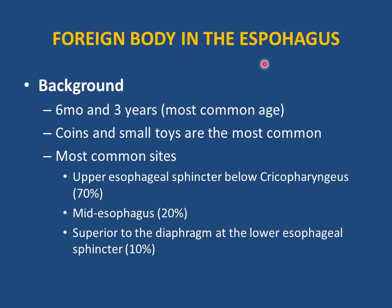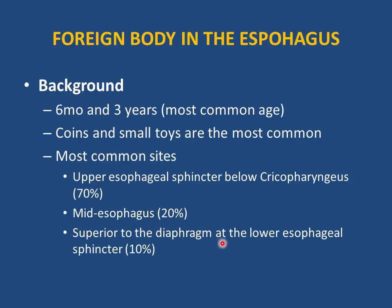Foreign body ingestion is most common between six months and three years but can occur at any age. Coins and small toys are the most commonly ingested items. The most common site of impaction is the upper esophageal sphincter (70%), followed by the mid-esophagus at the aortic arch (20%), and superior to the diaphragm at the lower esophageal sphincter (10%).